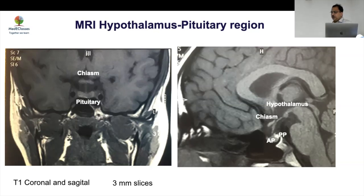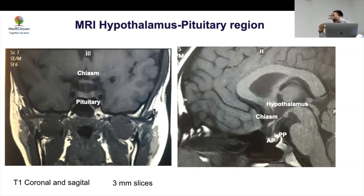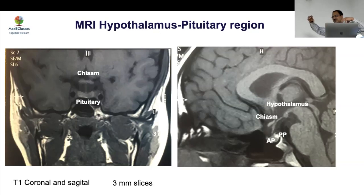Absent posterior pituitary bright spot may happen with both central causes and nephrogenic diabetes insipidus, so it is a non-specific finding. The anterior and posterior pituitary have different embryological origins — the anterior comes from Rathke's pouch and the posterior from the diencephalon. So with developmental abnormalities, the posterior pituitary may be ectopic and the anterior pituitary may be hypoplastic.